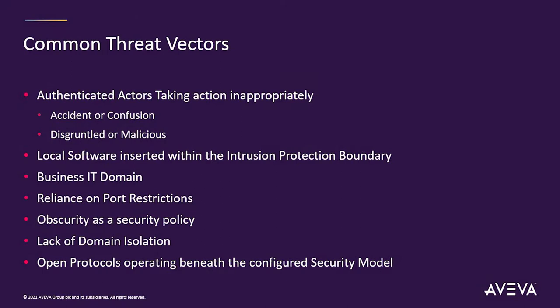I've changed the perspective a bit. Everything you've seen up to now is absolutely necessary, but let's look at it from the perspective of the control system engineer. What are his threat factors? His main one is not state actors or outside attackers — it's the guy standing right next to him. He's authorized to do something and he does it at the inappropriate time, either by accident, confusion, or because he didn't get a raise, or maybe he's just malicious and wants to create some damage. You've got to protect against these things.